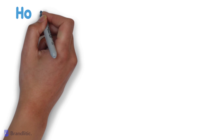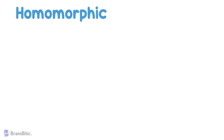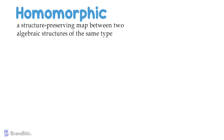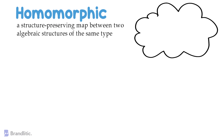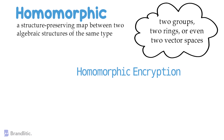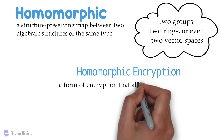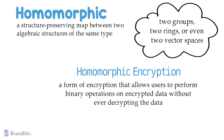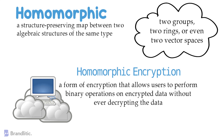Firstly, let's understand the meaning of the term homomorphic. It is fundamentally based in algebra and means a structure-preserving map between two algebraic structures of the same type — i.e., it can be two groups, two rings, or even two vector spaces. Similarly, homomorphic encryption is a form of encryption that allows users to perform binary operations on encrypted data without ever decrypting the data first. Because of this, we are able to encrypt and outsource information to a cloud service or environment for processing without giving any third-party access to our raw data.